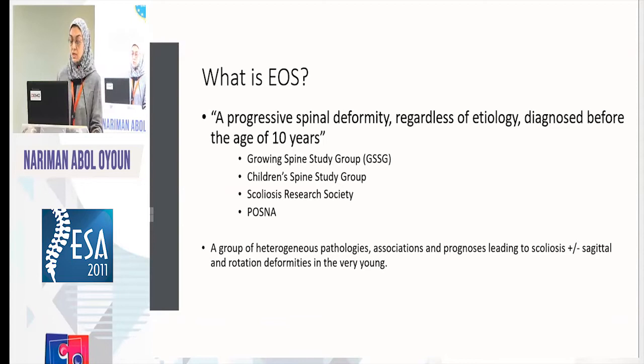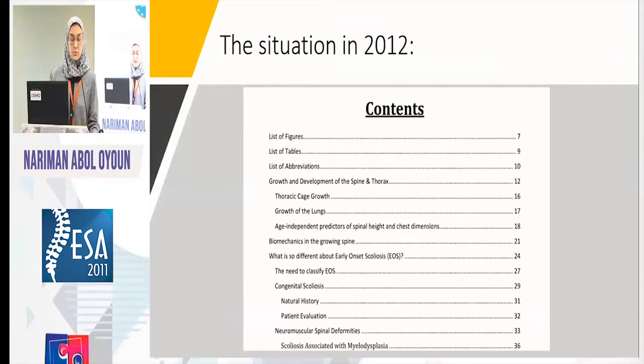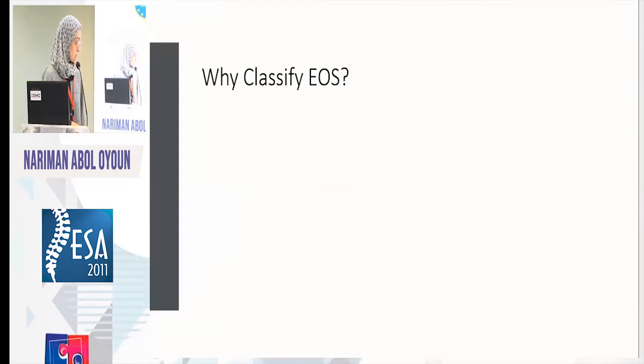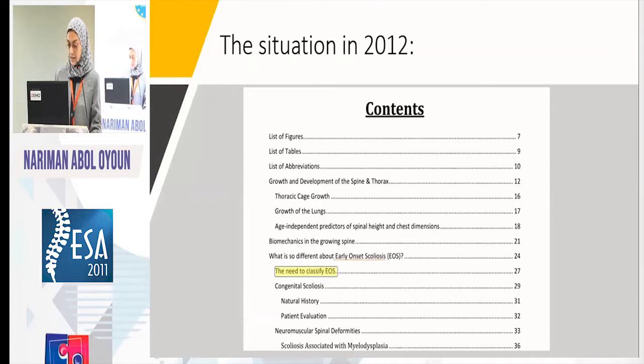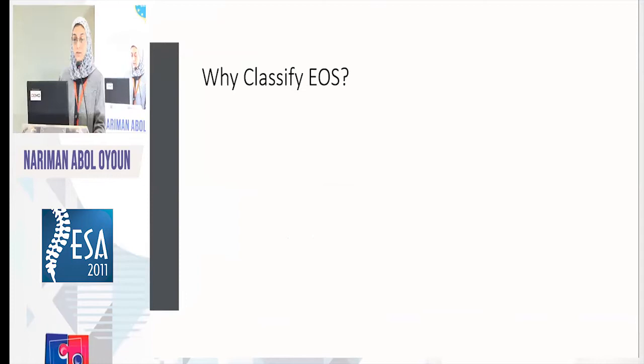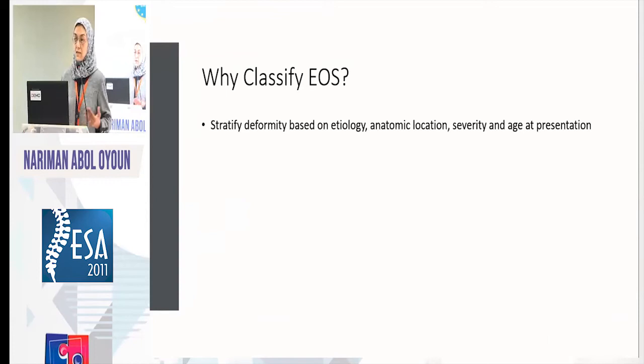Back in 2012, when I was writing my thesis about pediatric scoliosis, there was the issue of early onset scoliosis and the need to classify it. We had no classification of early onset scoliosis by then. Why do we need to classify? We need to classify because this stratifies patients according to their pathologies, natural histories, problems, and anatomical locations.